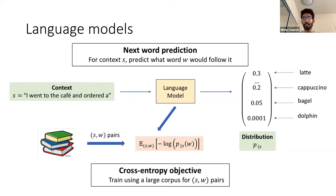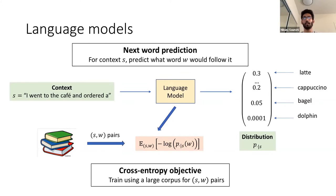Such language models are typically trained using a very large text corpus, like all of Wikipedia or even a larger scrape of the internet. This distribution is trained to minimize a cross-entropy objective — a very standard objective in machine learning. In the context of language modeling, the goal is to minimize this loss where you take an expectation over a pair (S, W), where S is a context and W is the next word after the context, selected from the unlabeled corpus. To minimize this objective, you want the language model to maximize the probability of the actual word seen after the context.